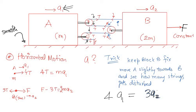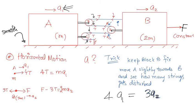Now we have three equations and three unknowns, which we can solve. The goal today was to introduce how to handle constraint relations when there are several pulleys and a string connecting them — and this trick lets you find the acceleration relationships quickly without writing out all the length equations in full.